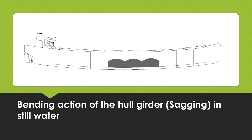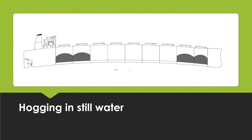The seagoing still water shearing force and still water bending moment limits are not to be exceeded when the ship puts to sea or during any part of the seagoing voyage. In harbor, where the ship is in sheltered water and subjected to reduced dynamic loads, the hull girder is permitted to carry a higher level of stress imposed by static loads. The harbor still water shearing force and bending moment limits are not to be exceeded during any stage of cargo operations carried out in harbor or port.